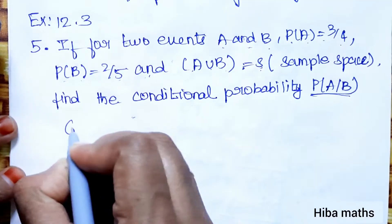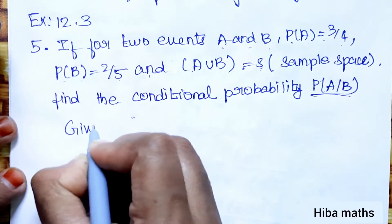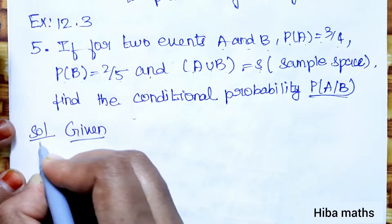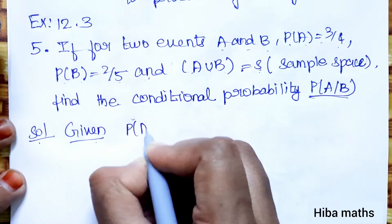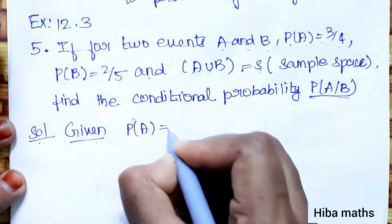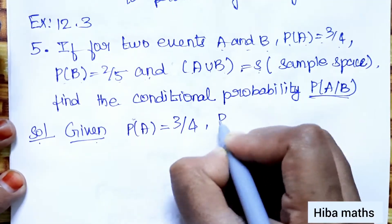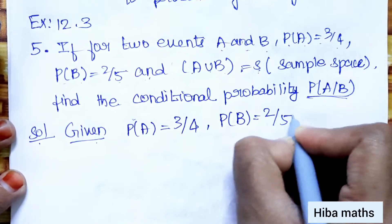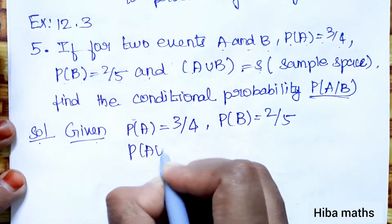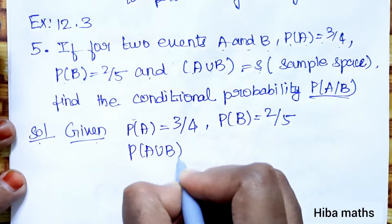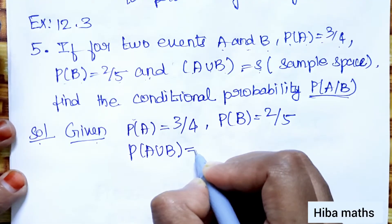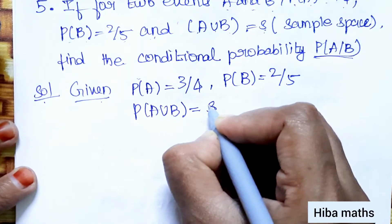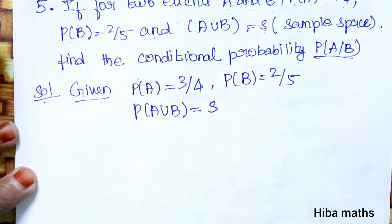Solution. Given: P(A) = 3/4, P(B) = 2/5, and P(A∪B) = P(S) = 1.